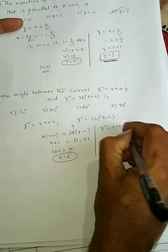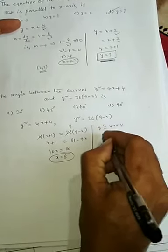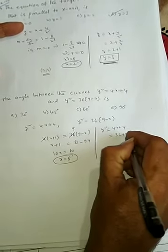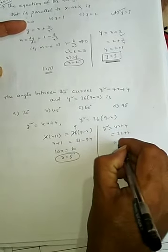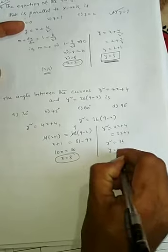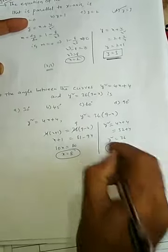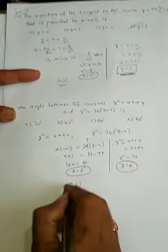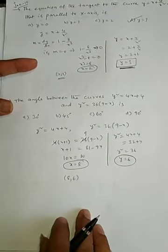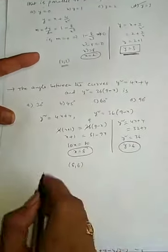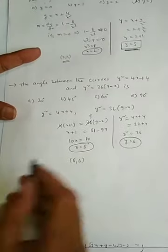Substituting x = 8 into y² = 4x + 4 gives y² = 32 + 4 = 36, so y = 6. Therefore the point of contact is (8, 6).